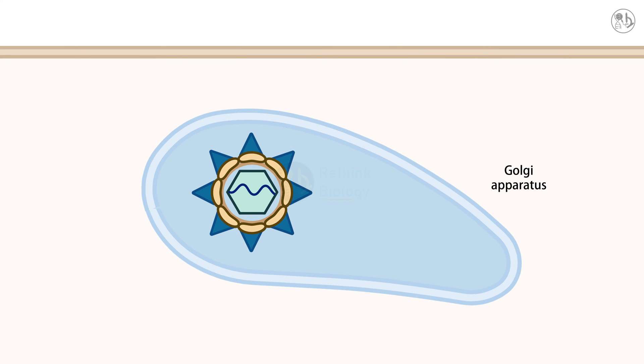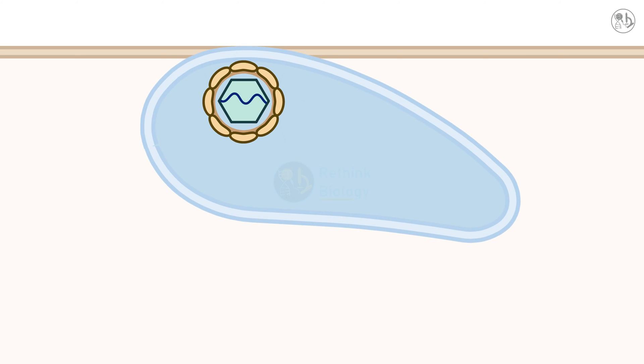The maturation process involves the cleavage of the prM protein by a cellular enzyme called furin, exposing the E protein and making the particles infectious. The mature particles are then released from the cell by exocytosis, ready to infect more cells.